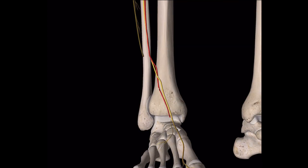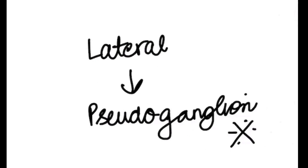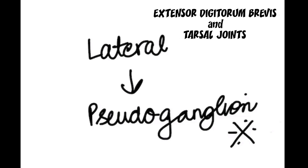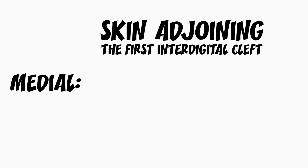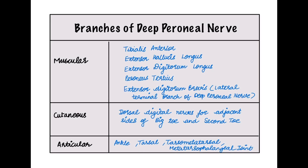Finally, the deep peroneal nerve terminates into lateral and medial terminal branches. The lateral terminal branch ends on a pseudoganglion, from which branches arise to supply the extensor digitorum brevis and the tarsal joints. The medial terminal branch supplies the skin of the first interdigital cleft and the proximal digits of the big toe. The deep peroneal nerve supplies the anterior compartment muscles and the ankle, tarsal, tarsometatarsal, and metatarsophalangeal joints.